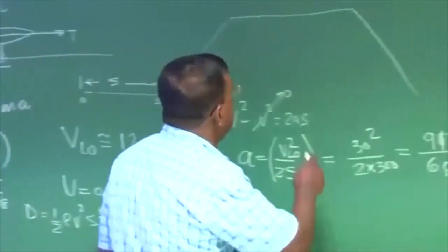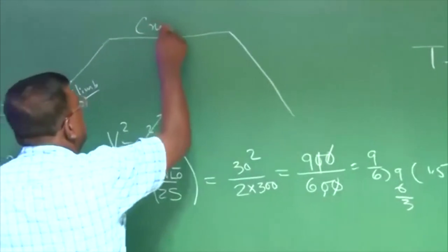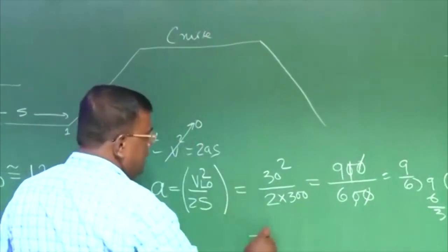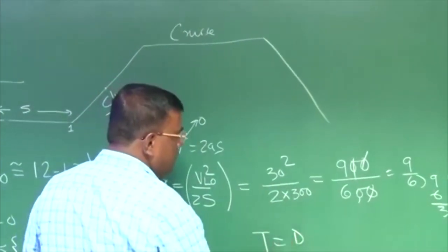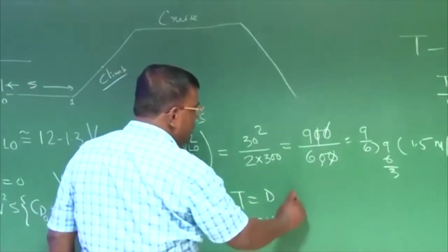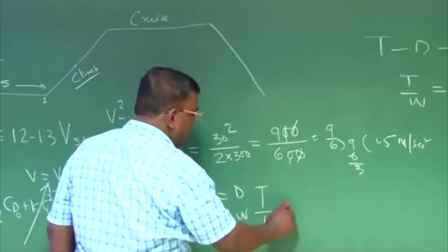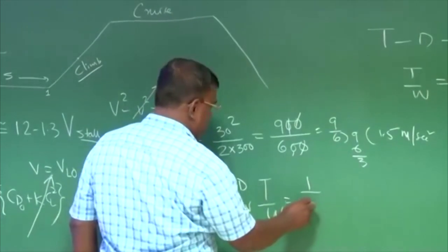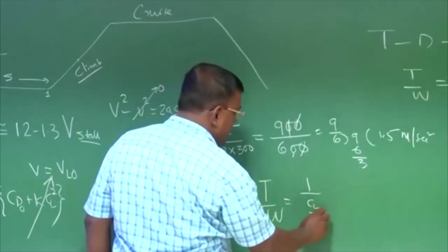Then for cruise, for here, we know that thrust is equal to drag, lift equal to weight, so t by w is equal to 1 by cl by cd.